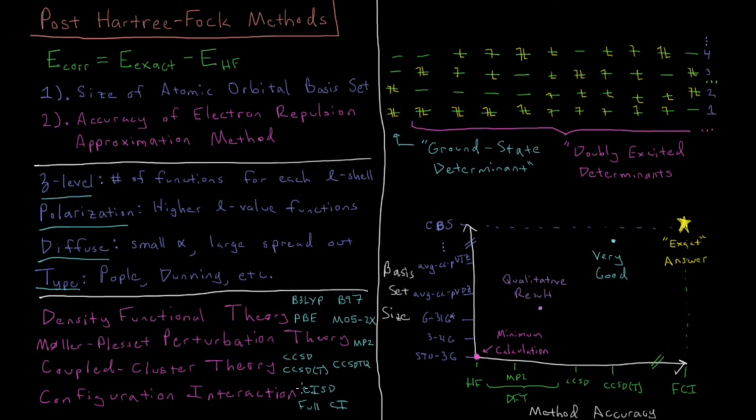Then there's configuration interaction. Same type of nomenclature as coupled cluster. You have configuration interaction singles, doubles, triples, quadruples, however far you want to go. Some of these, the lower number of excitations aren't used as much. There are some problems with that as you extend to larger systems. But what is in principle the exact answer for how electrons repel each other in a given basis set is called full configuration interaction or full CI. The exact way that electrons repel each other within a given atomic orbital basis set is represented by full CI. You include all possible determinants for all possible configurations of electrons in there. And then if you were to do full CI in a complete basis set, you would have in principle an exact answer.